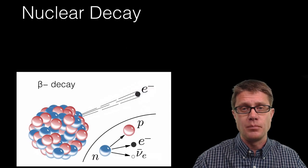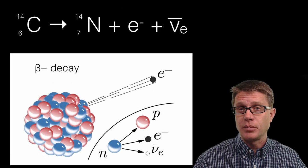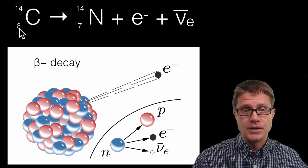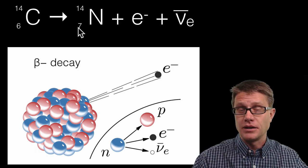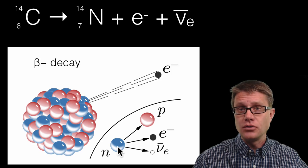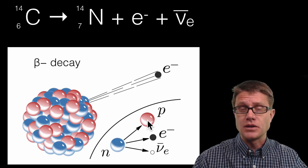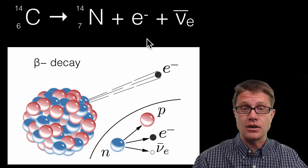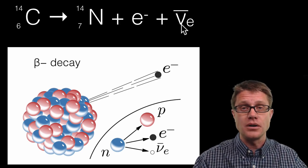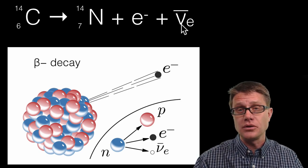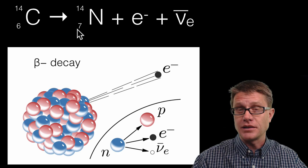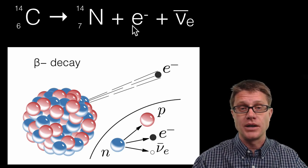We can also look at beta minus decay. An example is the decay of carbon-14 into nitrogen-14. On the left side the charge is 6+. On the right side, nitrogen has a charge of 7+. We have created a positive charge — that came from converting a neutron inside the nucleus into a proton. Since we made a positive charge, we have to make an equal negative charge — an electron. In beta minus decay we give off an electron, plus an electron anti-neutrino, which has no charge and no mass. The charges balance: left side is 6; right side is +7 minus 1, giving +6. Charge is conserved.